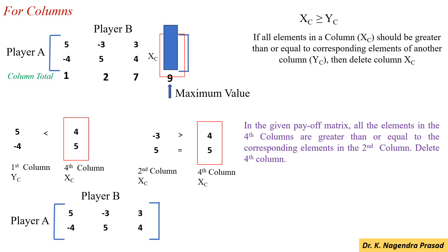Now, the payoff matrix has player A with the 1st and 2nd strategies — 2 strategies. So, player B has 3 strategies: strategy 1, 2, and 3. So, the 4th column, that is the 4th strategy, has been deleted.